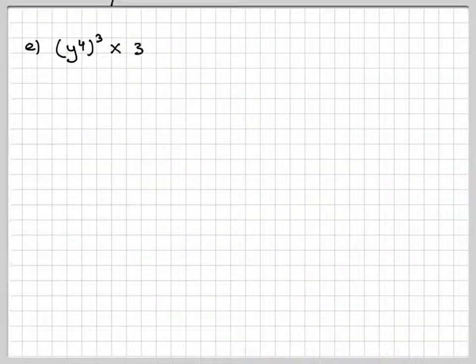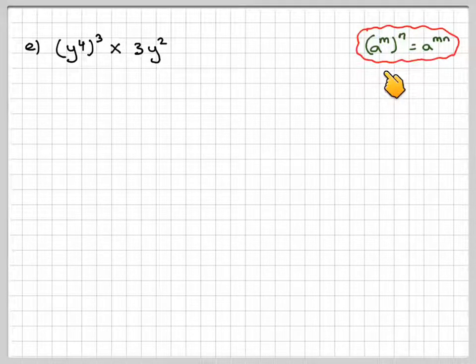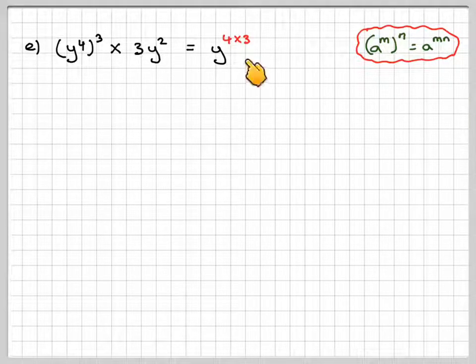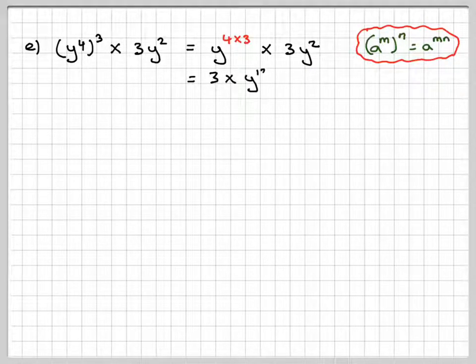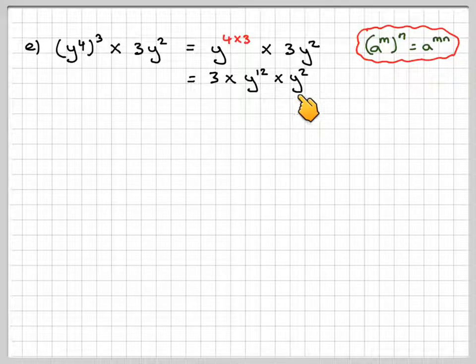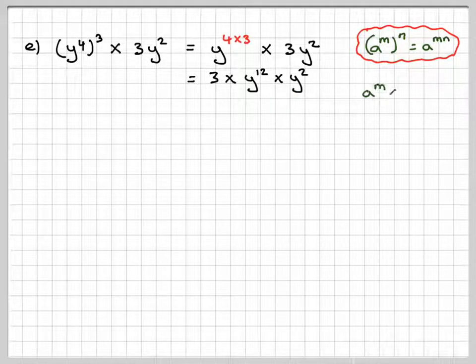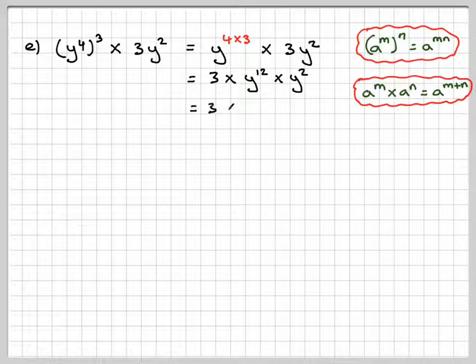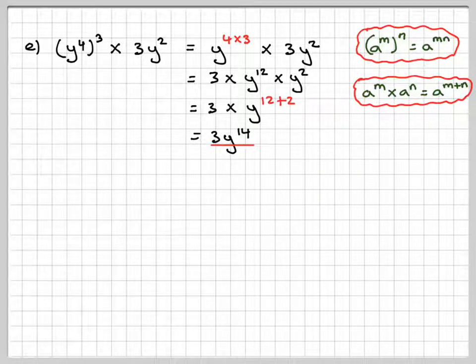Right, looking at E, we've got y to the 4 all cubed times 3y squared. So using this rule here, a to the m to the n becomes a to the m n, so this becomes y to the 4 times 3 times 3y squared. So that's equal to 3 times y to the 12 times y squared. Now the rule here means we have to add the powers using this rule here. So we're going to end up with 3y to the 12 plus 2, which gives me 3y to the power of 14.